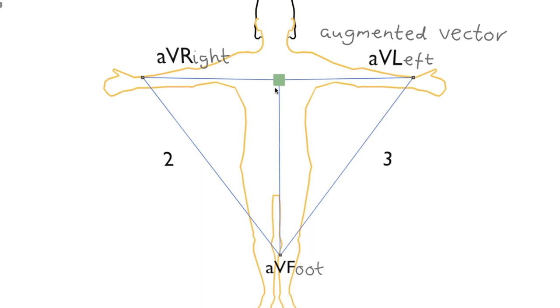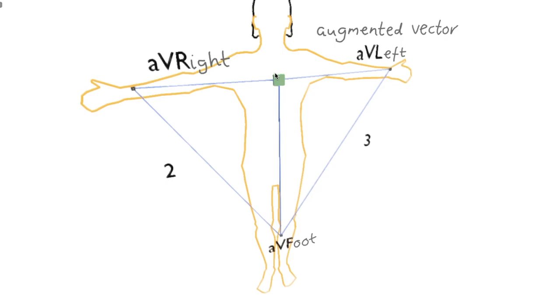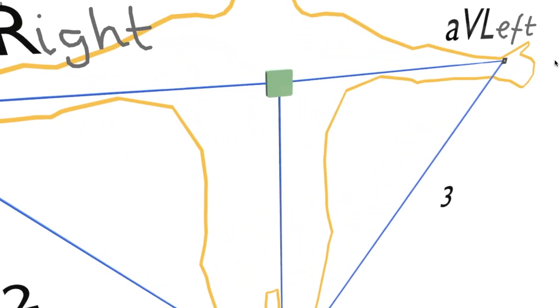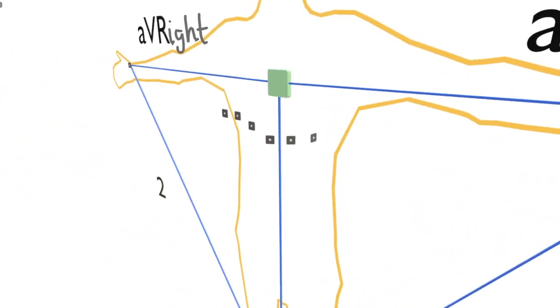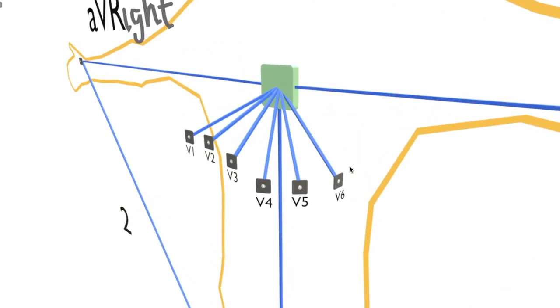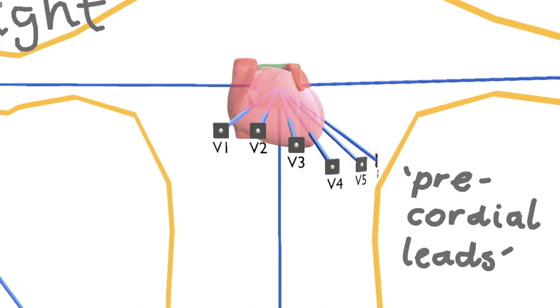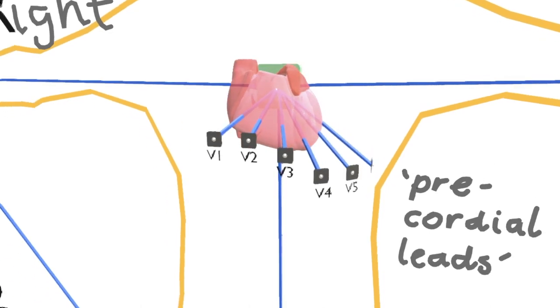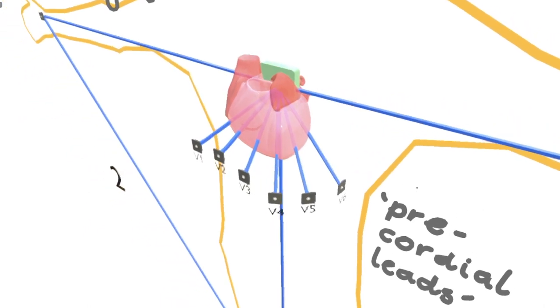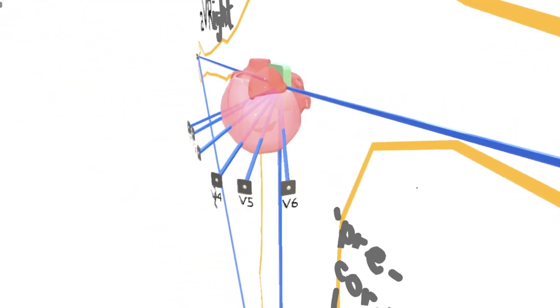And if we continue to use that as a negative pole or a negative electrode, we can apply electrodes across the chest, six of them in fact, to also get leads in these directions. These are named V1 through to V6. They're also called the precordial leads.